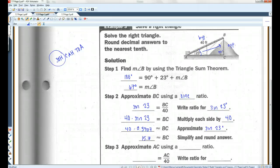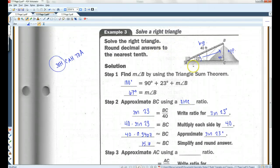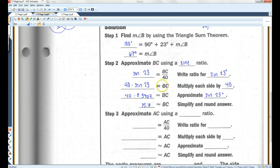Now, let's look at AC. AC is the adjacent side. So, adjacent side, and we're given the hypotenuse. Adjacent hypotenuse, we're going to use cosine here. So, approximate AC using a cosine ratio. Cosine of 23 degrees. AC over 40. So, that's writing the ratio for cosine of 23. I'm going to multiply each side by 40. So, I've got 40 times cosine of 23.